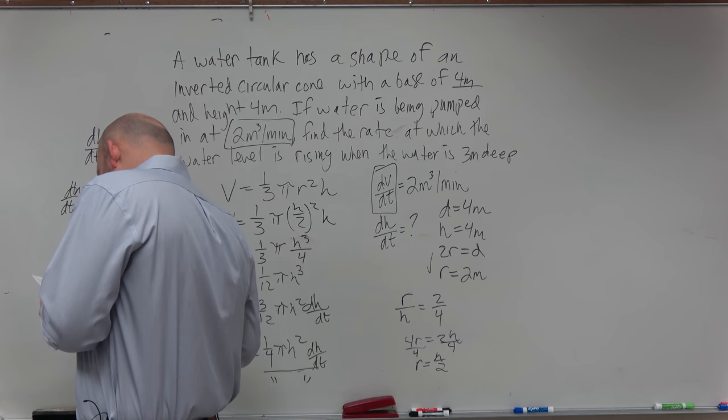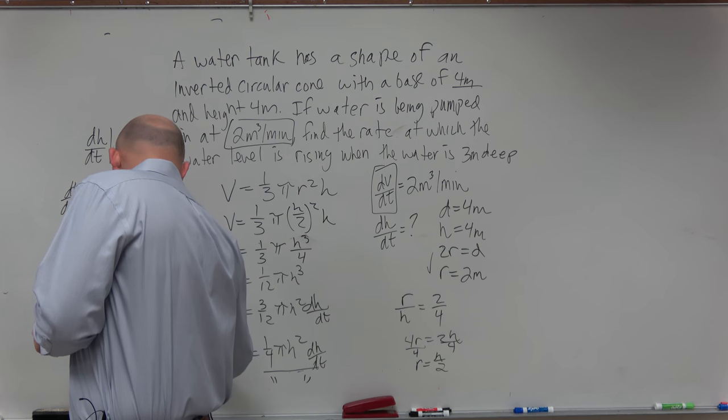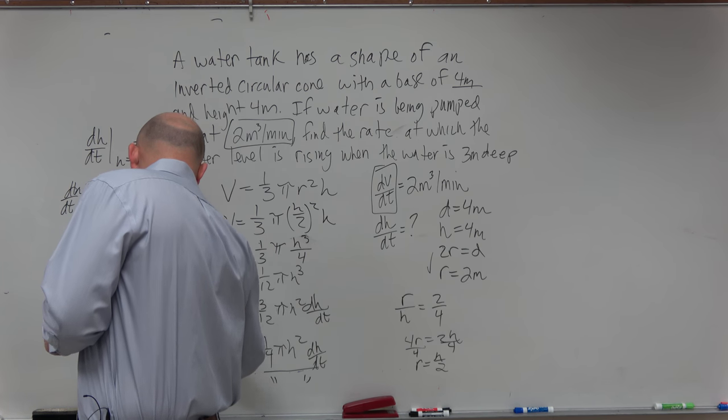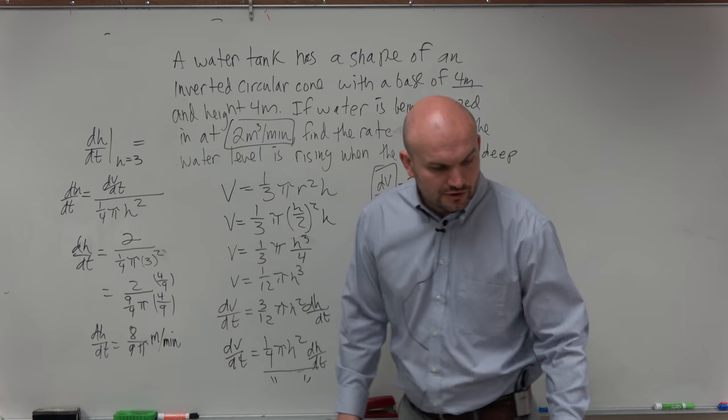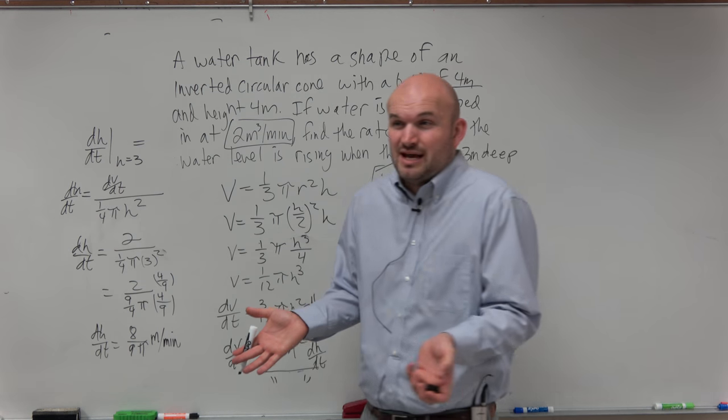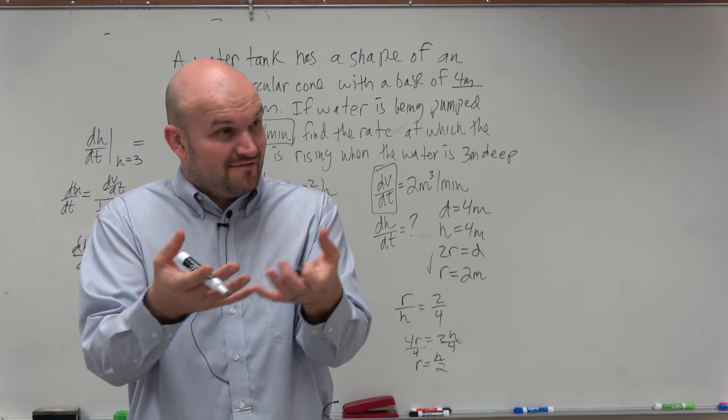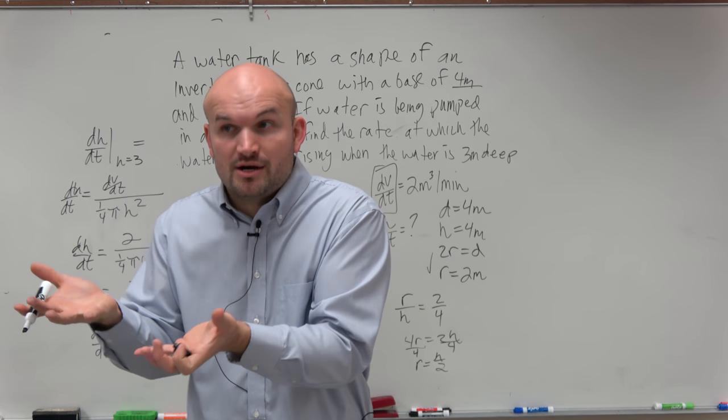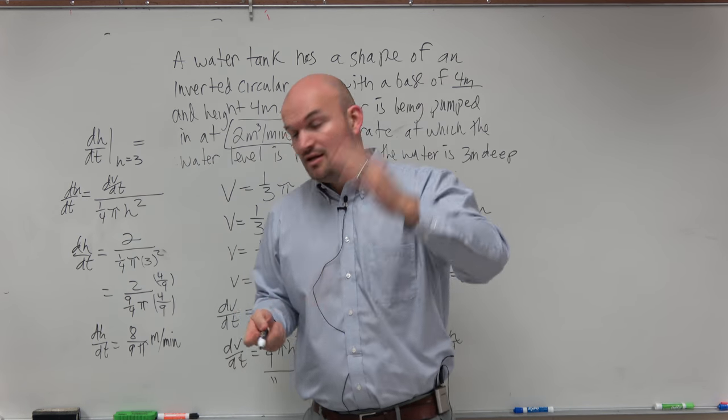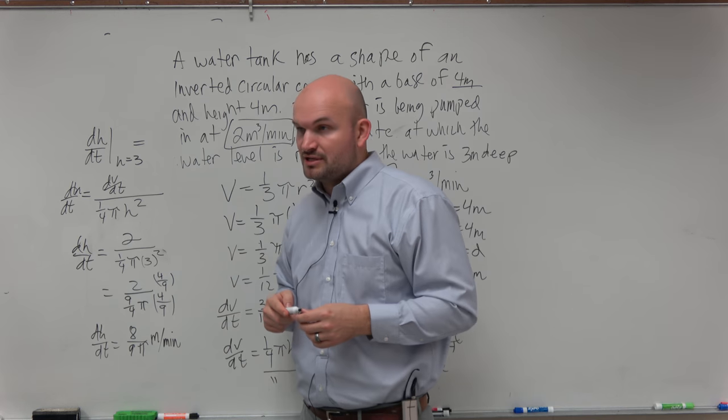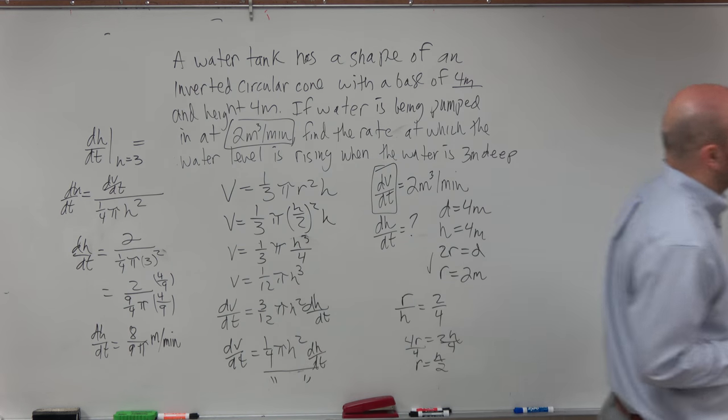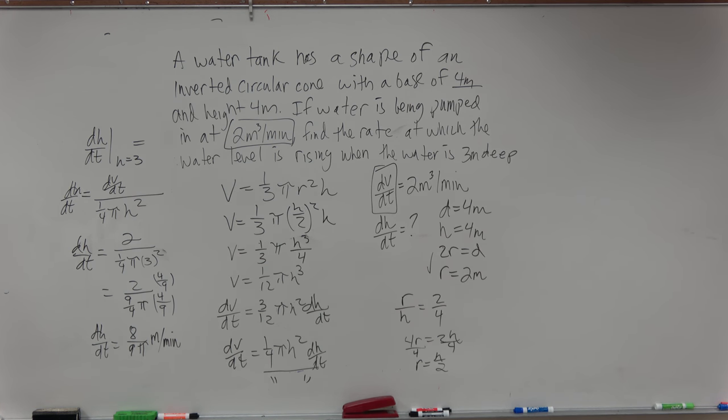And dh/dt is equal to 8 over 9 pi. And just remember to include your degree. And then think about this. We're looking at volume. Remember, volume is having a cubic measurement. Area has a squared measurement. And this is just talking about height, which is just going to be a linear measurement. So it's going to be your meters per time. Anybody have any questions on that one?